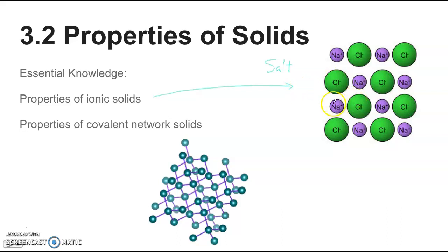Ionic solids only conduct electricity when the ions are free to move. That happens when they turn into a liquid by melting, or if they get dissolved in water. But in the solid form, they don't conduct electricity.